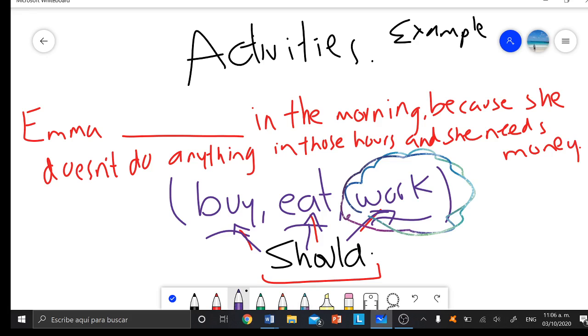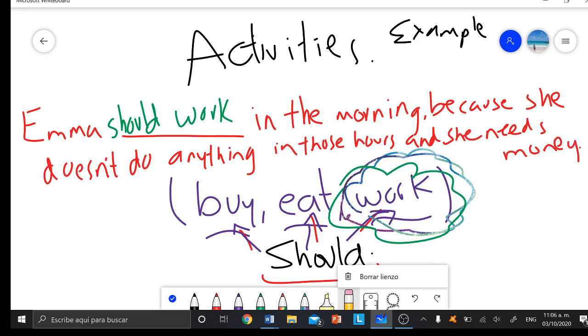Obviously the only one that makes sense to our sentence is 'work'. So what do we have to do? We write 'should'. Emma should work in the morning because she doesn't do anything in those hours, porque no hace nada en esas horas, and she needs money. That would be our answer. That's the example of activity number one.